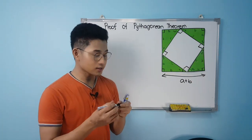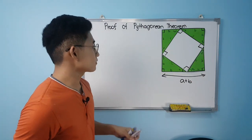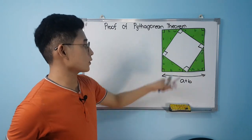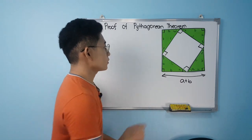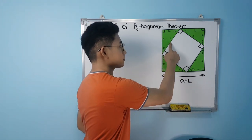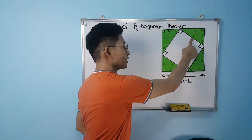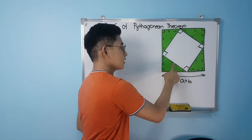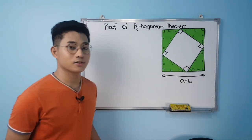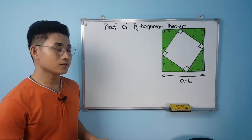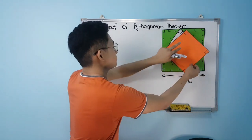For the smaller square: each of its four sides is C, and we have already confirmed its four right angles. Therefore, this inner shape is also a square with side C.